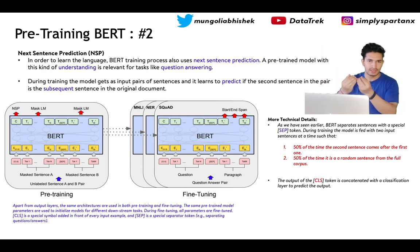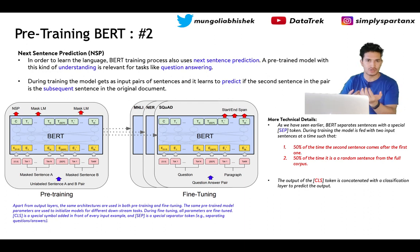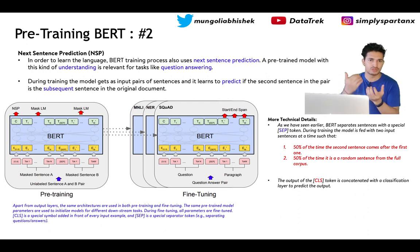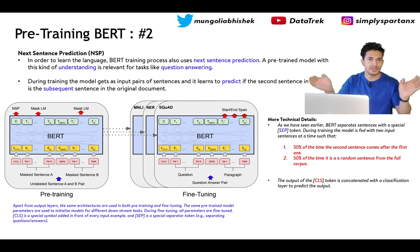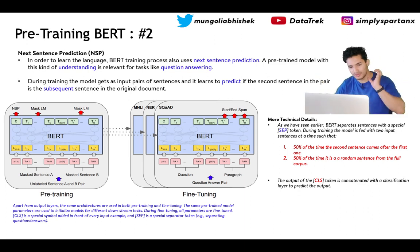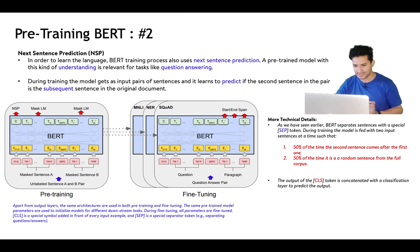If the sentences are sequential, the class label passed through a sigmoid activation should output a high probability. If the second sentence is random, the sigmoid should output a probability close to zero — indicating the two sentences are not consecutive.